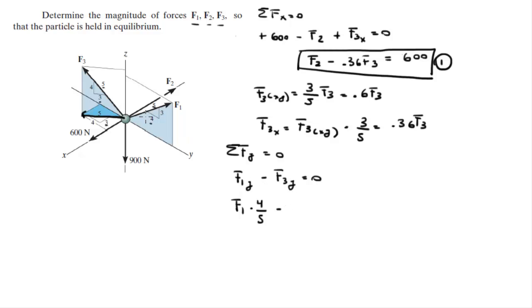And F3's Y component is equal to the projection that we found before, the projection of F3 onto the XY plane, but this time times 4 over 5. So, 0.8F1 minus the projection, which is 0.6F3, times 0.8, equals 0.48F3. And the sum of these two is equal to 0. This is equation 2.